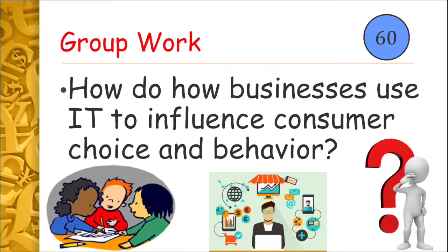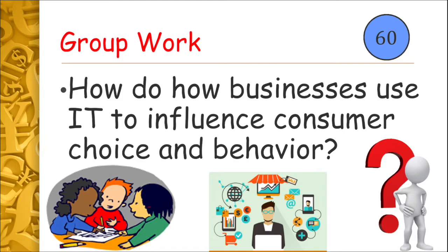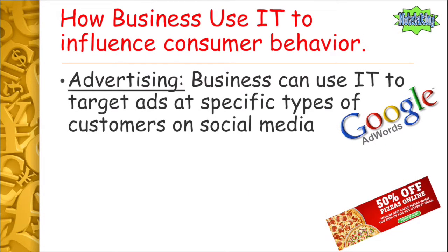Now think about how businesses use IT to influence consumer choice and behavior — why do they use IT to get you to do things the business wants you to do? Pause the video, have a think, and press play when ready. A good example of this is advertising. Businesses use IT to target ads at specific types of customers on social media, for example through Google AdWords or Facebook Ads, where they can target a very specific age range — say male 16 to 18 year olds in South County Dublin.